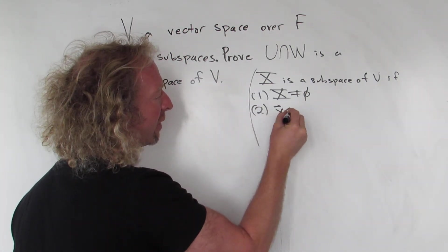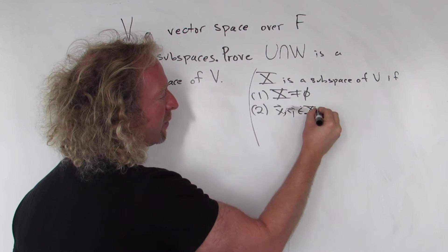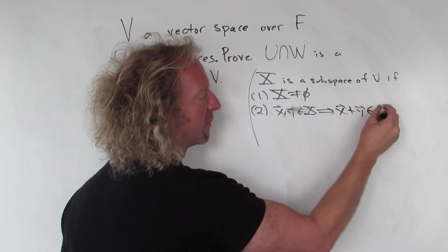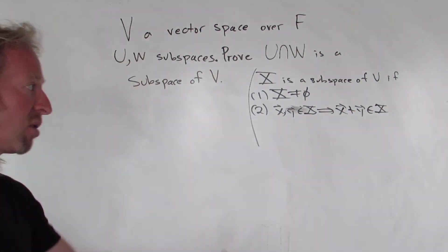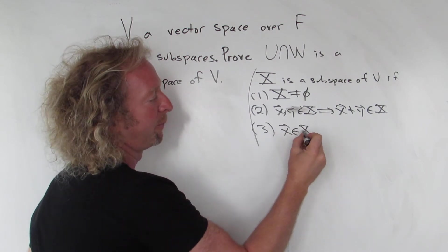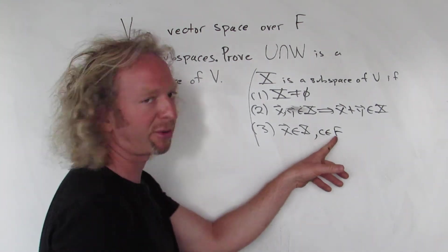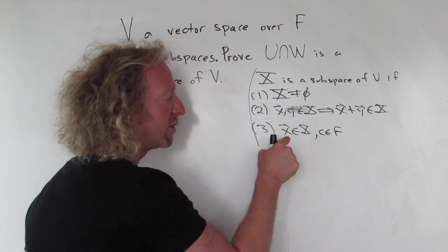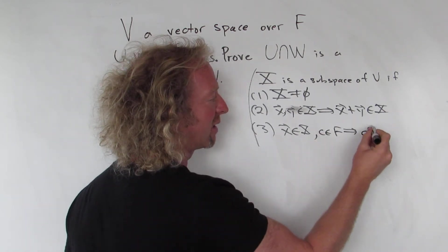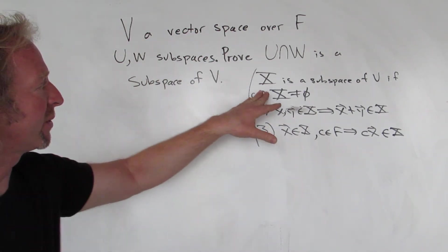Condition two: for every vector X and every vector Y in capital X, whenever you have two vectors in capital X, the sum of those vectors is also in capital X — so X plus Y is in capital X. That's called closure under vector addition. And condition three: if you have a vector in capital X and a scalar C in your field F — the field is usually the real numbers or complex numbers — then C times the vector X also lives inside your set. If all three conditions are satisfied, we say capital X is a subspace of V.